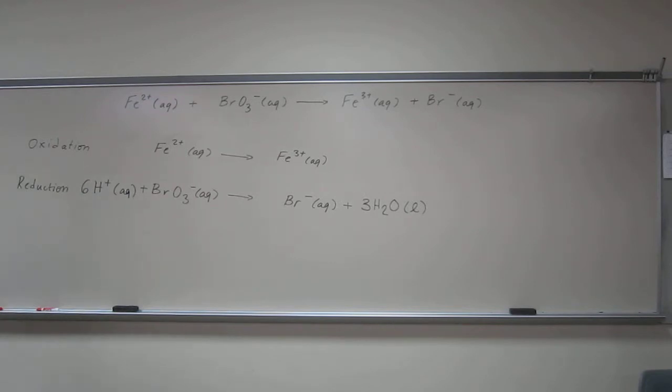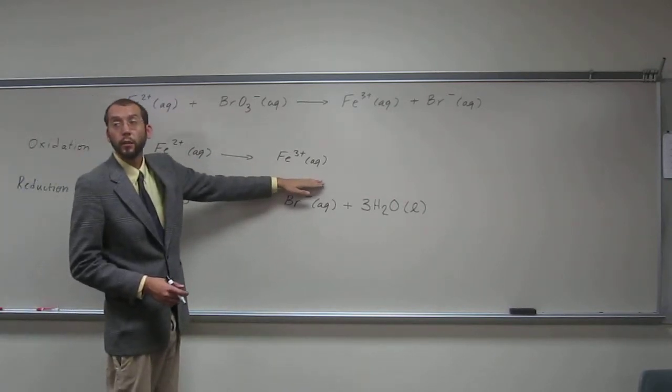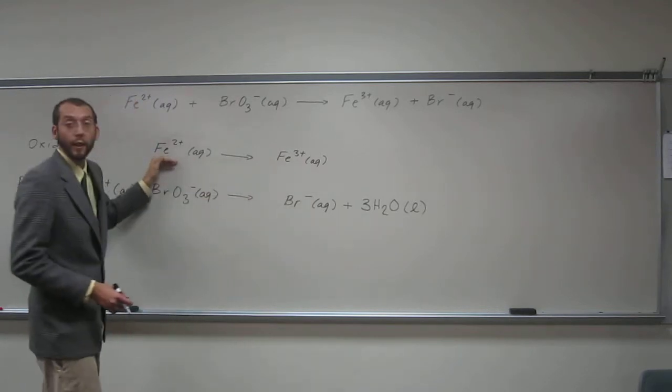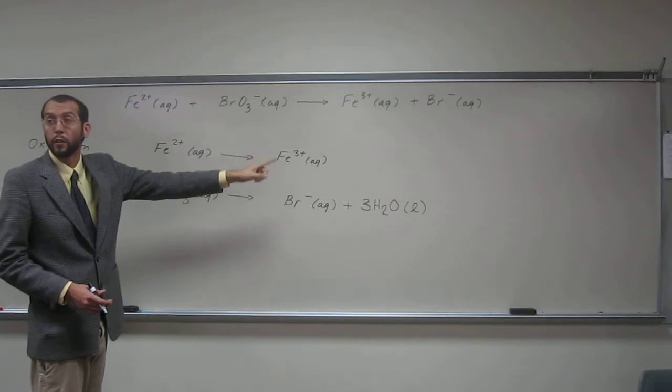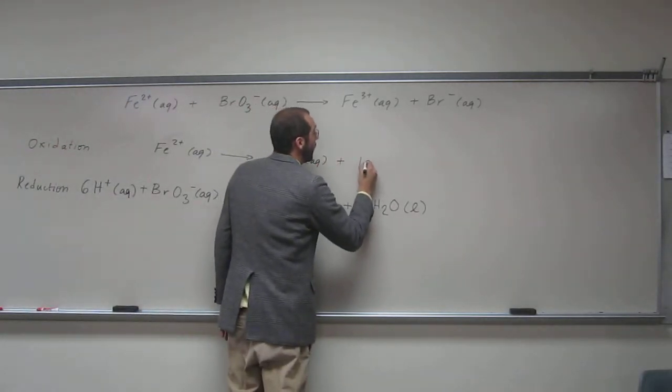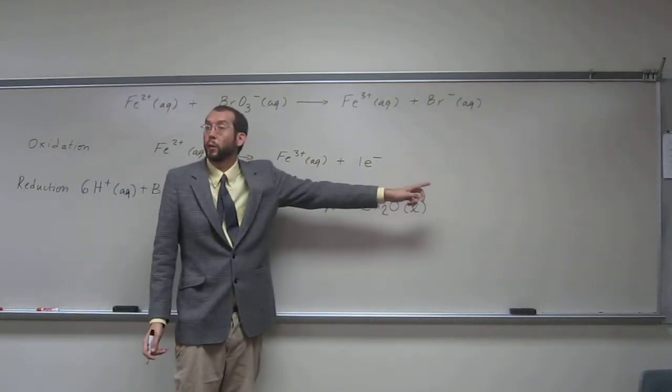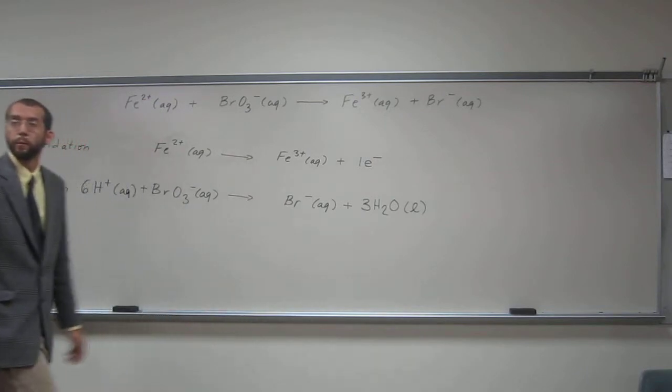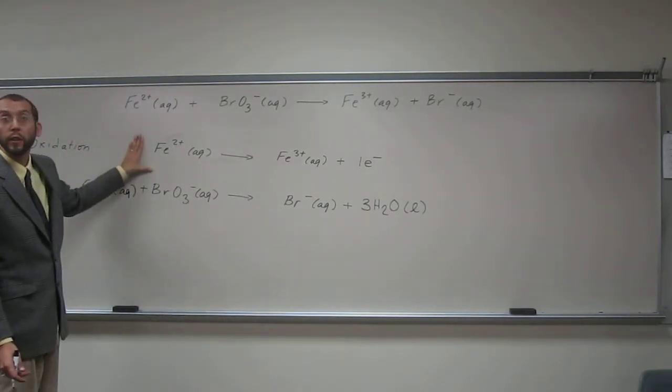So the next thing we want to do is balance our charges. So here, we've got a +2, and here we've got a +3, so in order to get that down to a +2, we're going to add an electron to the right-hand side, or on the product side of that equation. So now we're going to have +3, -1, equals +2, does that make sense? So this one is balanced by number and charge.